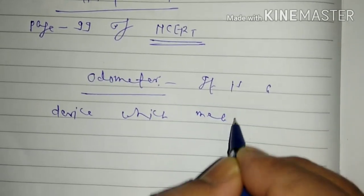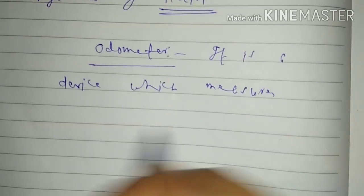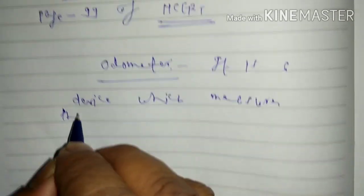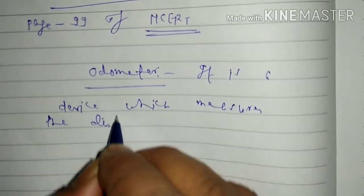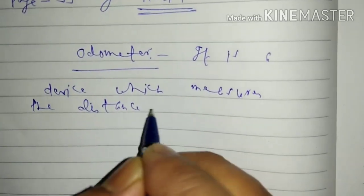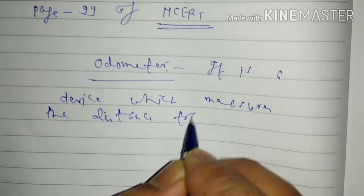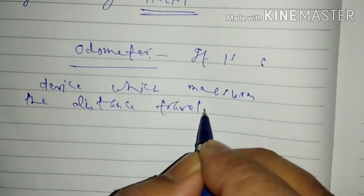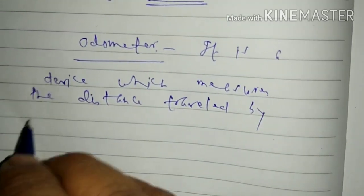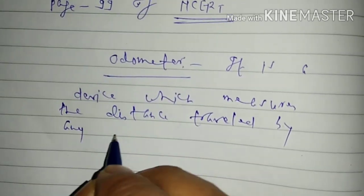Odometer, it is a device which measures the distance traveled by any vehicle.